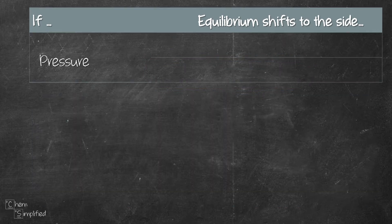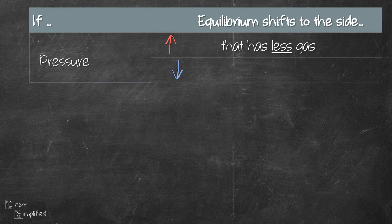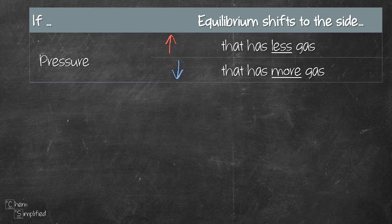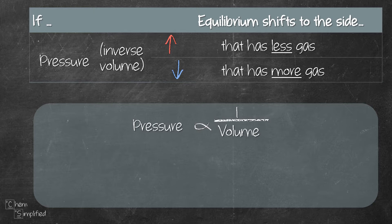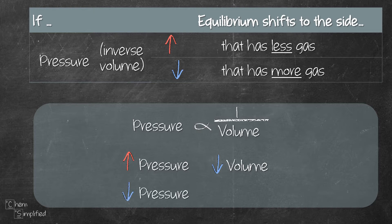Moving on to the third stress: pressure. If we increase the pressure on the system, the equilibrium shifts to the side that has fewer gas molecules. If we decrease the pressure, it shifts to the side that has more gas molecules. Sometimes questions mention volume instead of pressure. Note that we are referring to increasing or decreasing the volume of the reaction vessel, not the volume of gas molecules. Since pressure and volume are inversely proportional according to Boyle's law, increasing pressure means decreasing the volume of the reaction vessel. You can convert between the two and use the same guideline to determine the equilibrium shift.